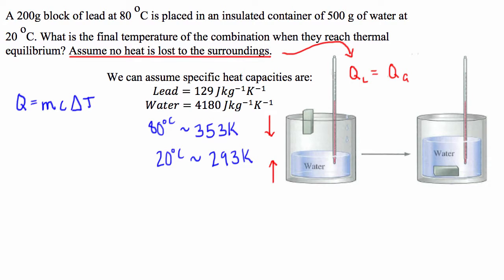Getting back to this equality that we came up with just before, what we're going to do is we're going to set the Q of the water equal to the Q of the lead. So what we're going to see is the mass of the lead times the specific heat capacity of lead times the change in temperature of the lead. So this is for the lead side. It's going to be equal to the mass of the water times the specific heat capacity of water times the change in temperature of the water.